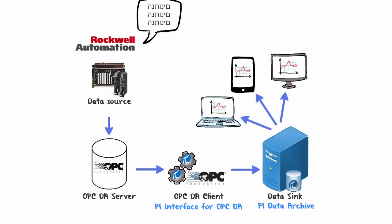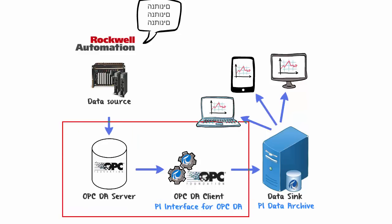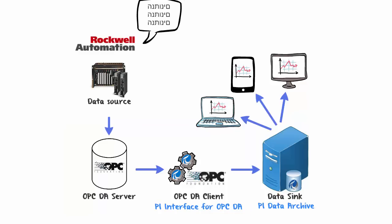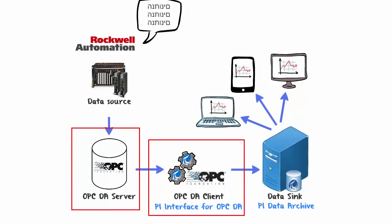At this point you might be wondering where to install these different components. You have a couple of different options, but what we recommend is to install the OPC DA server and the PI Interface for OPC DA on the same node. This greatly facilitates the installation process and also reduces the points of failure since both are on the same node. However, it is possible to install the OPC DA server and the PI Interface for OPC DA on different nodes, but this will require an additional step of configuring DCOM security, so this is important to keep in mind.